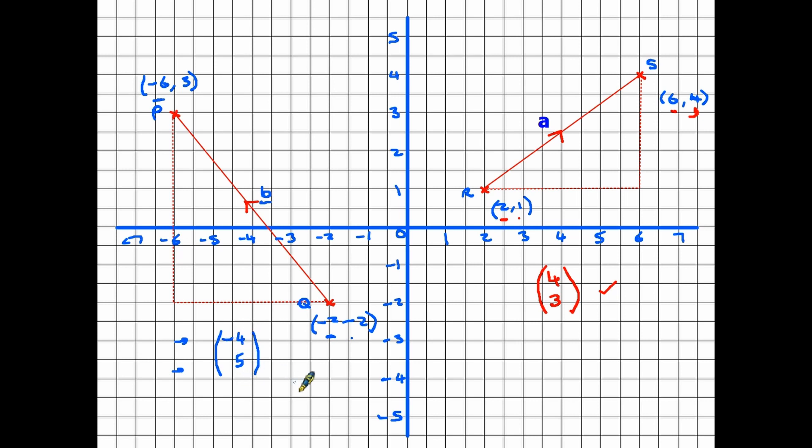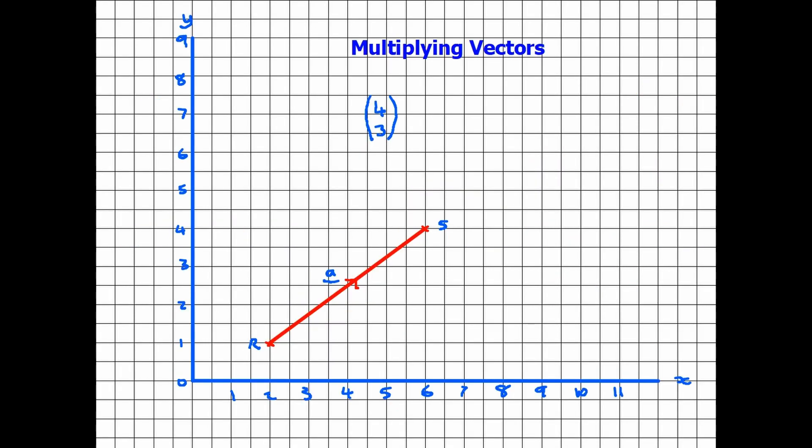I want to move on to some maths that we can do with vectors now, and I'm going to use this original vector on the right hand side here. It's a vector of (4, 3). So let's take this on to a new page. Here we've recreated the same vector just using the top right hand quadrant of the graph. We said before that R was at (2, 1) and that S was at (6, 4). We've also said that the vector has a movement of 4 along the x and 3 up the y axis. Let's say you were asked to multiply this vector by 2. It's quite simple. All you do is take the top number 4 and multiply it by 2, that becomes 8, and 3 times 2 becomes 6.